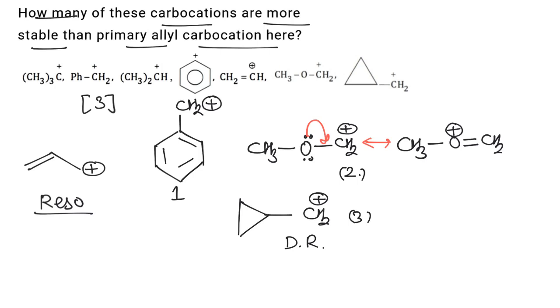Vinyl carbocation, phenyl carbocation, and tertiary butyl carbocation are less stable than the allyl carbocation.